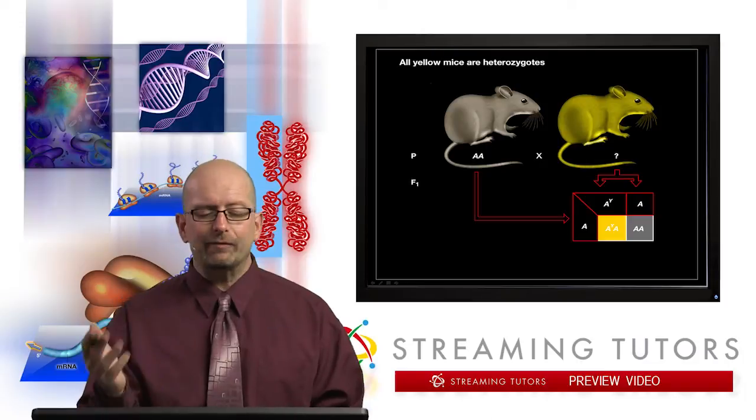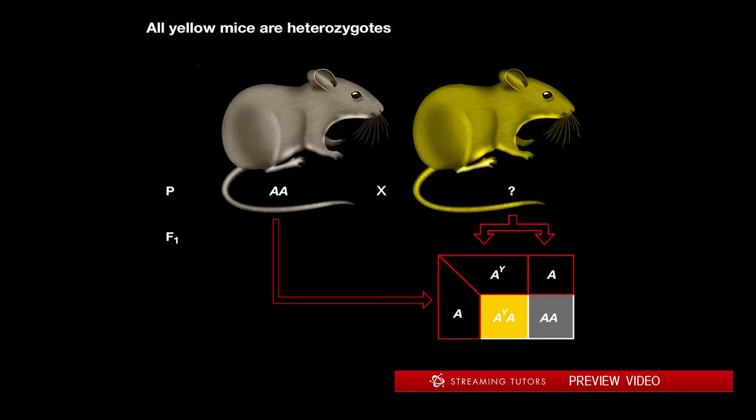So the idea was—after doing some preliminary stuff, I mean it's sort of a little backwards the way we're thinking about it—but the fact is, all yellow mice are heterozygous. But how did we determine that? If they took a pure-breeding agouti line like this and crossed it with the yellow mice, always what they